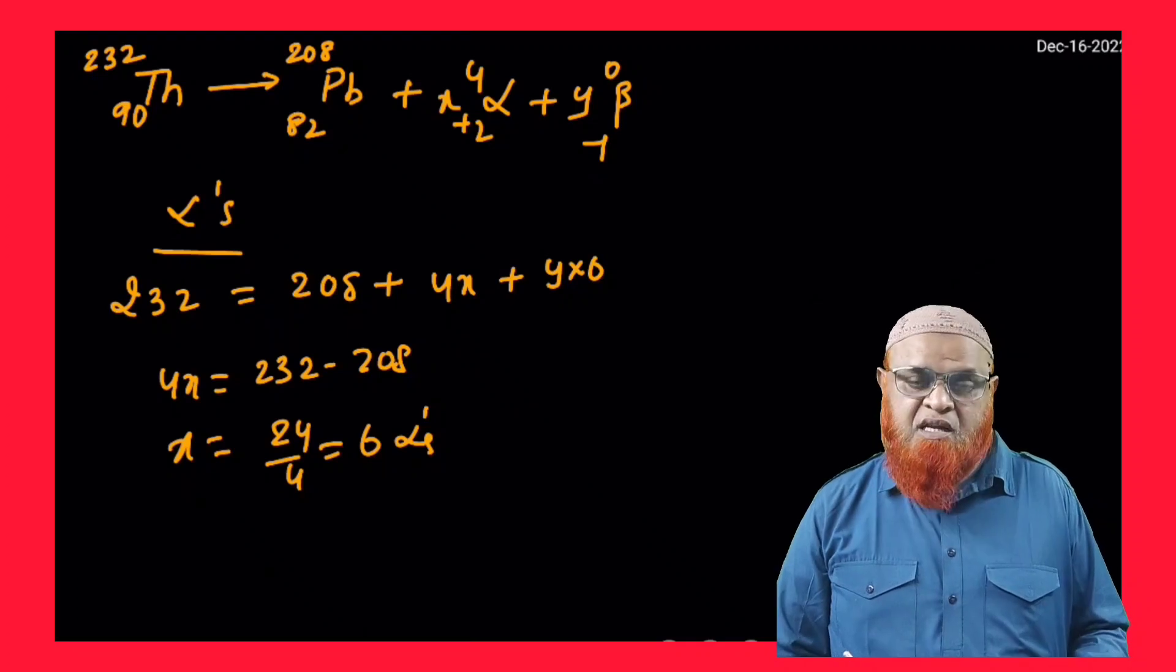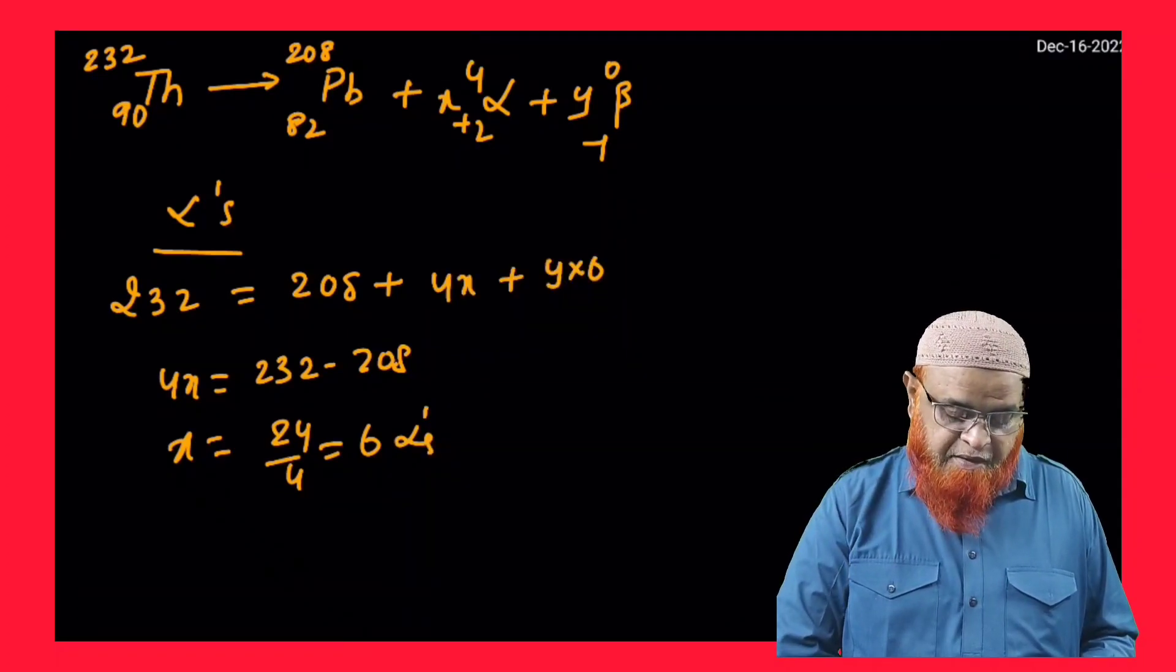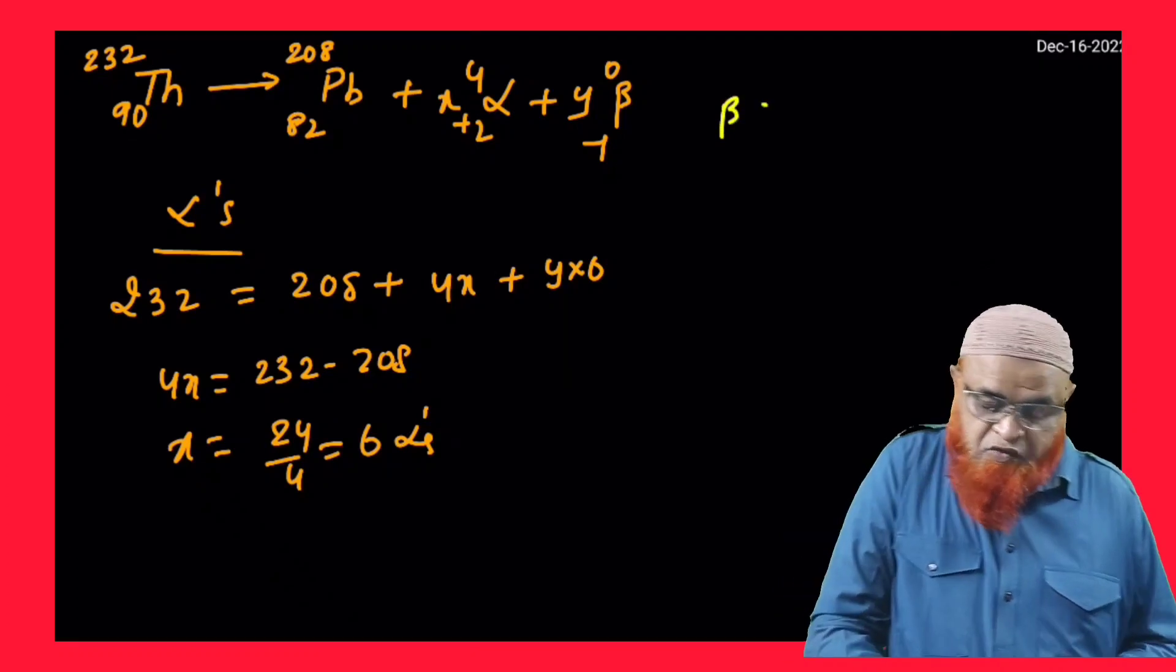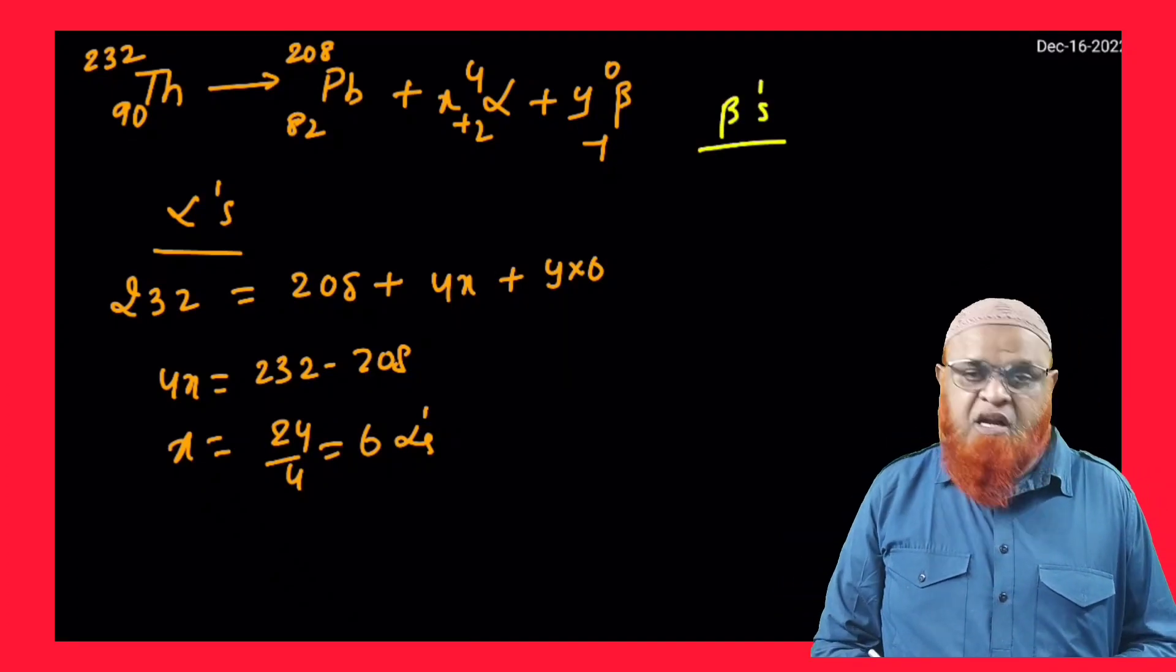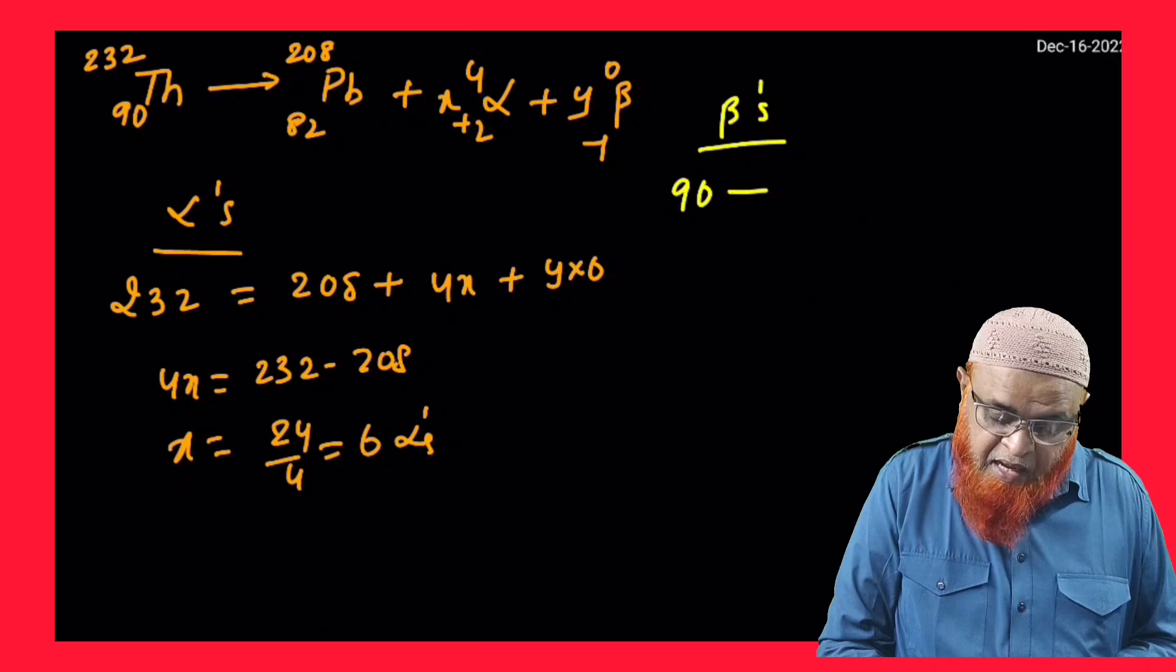To find out the number of beta particles here, what are you going to do? For example, to find out the number of beta particles, you have to consider the atomic numbers. Like, for example, 90...